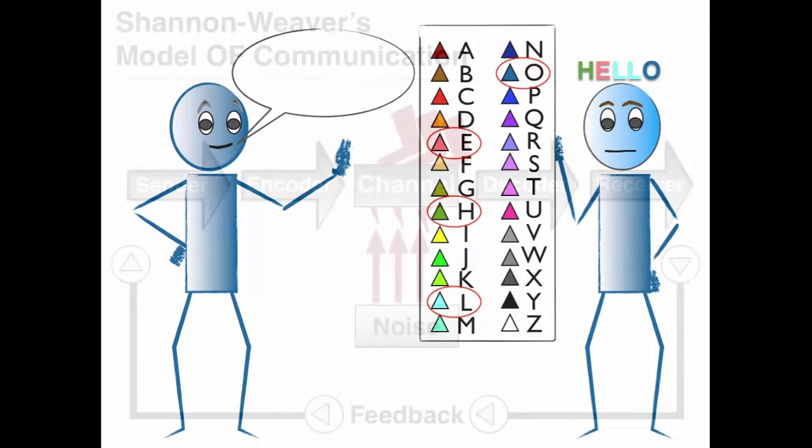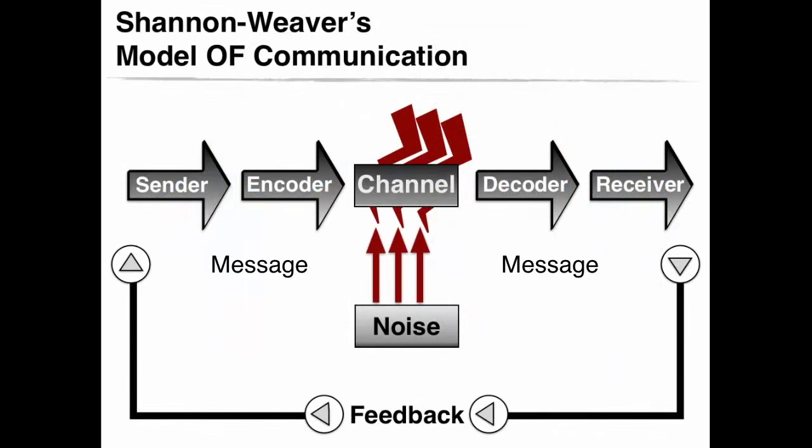Shannon and Weaver presented the following model to explain the steps of communication. According to their model, there are eight variables that play on communication. There is the source, the encoder, the message, the channel, the decoder, the receiver, the noise, and feedback.